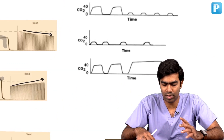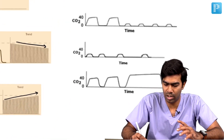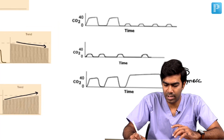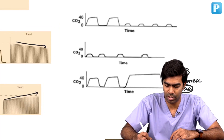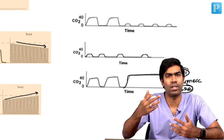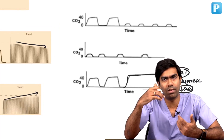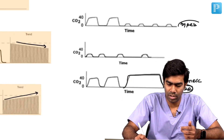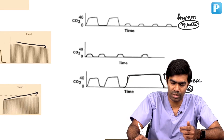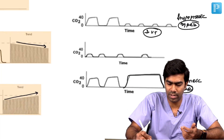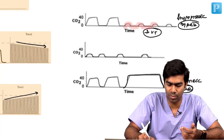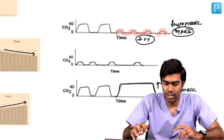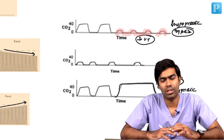Remember, hypoventilation causing high EtCO2 is not always straightforward. For example, this is the characteristic Type 1 hypoventilation, referred to as bradypneic hypoventilation — low respiratory rate. Here you can see the waveforms progressively increase because with that reduced respiratory rate, CO2 elimination per breath increases. But there is a second type, Type 2, referred to as hypopneic hypoventilation, where the problem is low tidal volume. Per breath, how much CO2 is eliminated will be low because the tidal volume is very low.